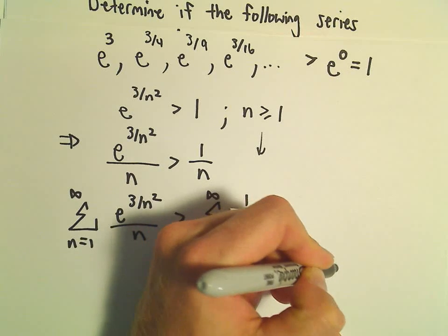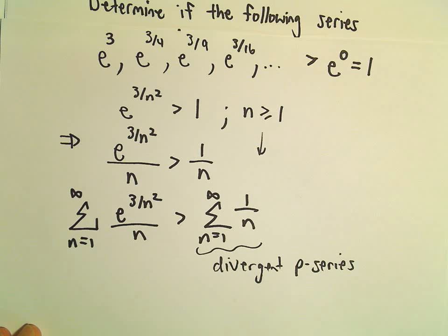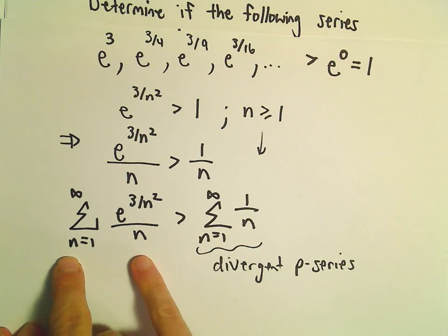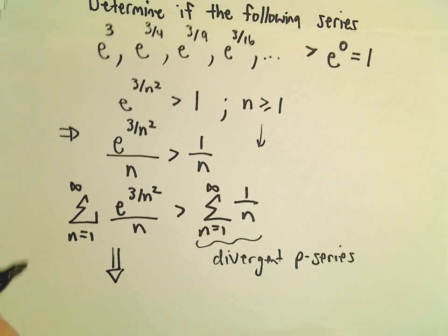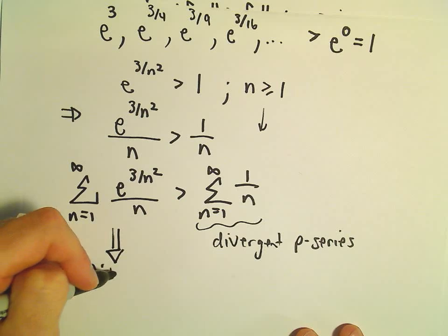In fact, it's the good old harmonic series. Since the series on the right diverges, and we've justified that the series on the left has a larger value, we can conclude also that this series must be divergent.